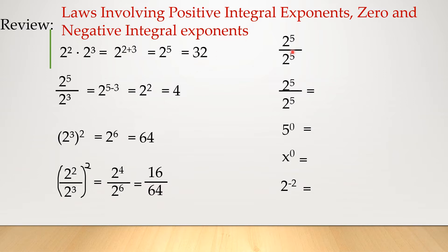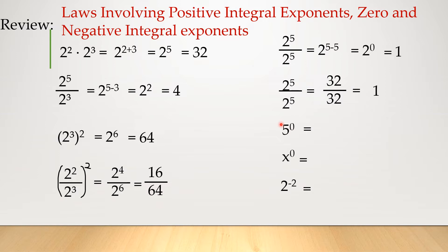Look at this one. We are dividing the same number, so that means it is 2 raised to 0, because in dividing we subtract the exponents. And what is 2 raised to 0 equal to? Equal to 1. Why? Because we are just dividing the same number — it's just like 32 divided by 32. 2 to the 5th power over 2 to the 5th power is equal to 1. So therefore, 2 raised to 0 is equal to 1.